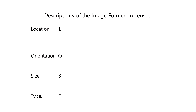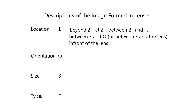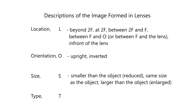To describe the image, we find the location, orientation, size, and type of the image. The location can be beyond 2F, at 2F, between 2F and F, between F and the lens, or in front of the lens. The orientation can be upright or inverted. The size can be smaller than the object (reduced), the same size, or larger than the object (enlarged). The type can be real or virtual.